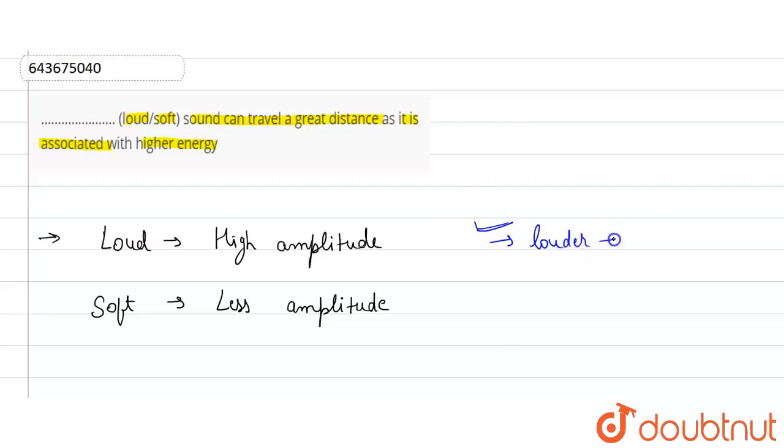So louder sound means it will have good intensity because intensity is proportional to the amplitude whole square. So if it will be a greater intensity, then it will travel more.